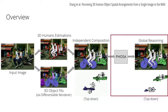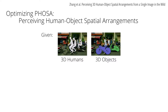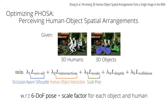Now we'll move to our global reasoning module. Given independently estimated 3D humans and 3D objects, we optimize a weighted sum of loss terms with respect to the 6-DoF pose and intrinsic scaling factor of each object and human. Inferring the intrinsic scales of humans using object interactions distinguishes between tall people far away and short people close by. Our loss terms consist of an occlusion-aware silhouette loss, a human-object interaction loss, and a prior on human and object intrinsic scale. We also incorporate losses to encourage the correct depth ordering as well as to avoid interpenetration.